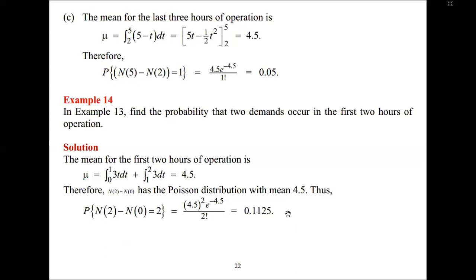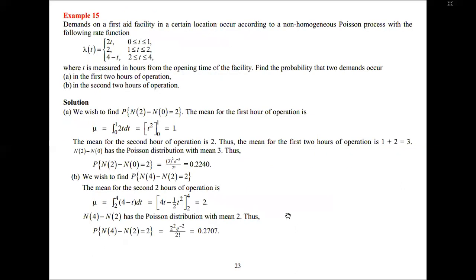That's how we solve problems where lambda is not constant: integrate the rate function over the given time interval to obtain the mean for the Poisson distribution. Example 15 has also been solved using the same procedure. It's also a past question involving demand, but this time the rate functions are 2, 3, 2, and 4 minus T. Following the same approach as explained in Examples 13 and 14, Example 15 has been solved.